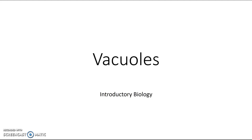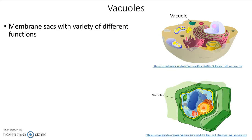Hi everyone! This video is about vacuoles. Vacuoles are membrane sacs we find inside cells that have a variety of different functions depending on what kind of cell they're found in. Because they're made of membrane, they are considered part of the endomembrane system along with other organelles such as the rough ER, the Golgi apparatus, and vesicles.